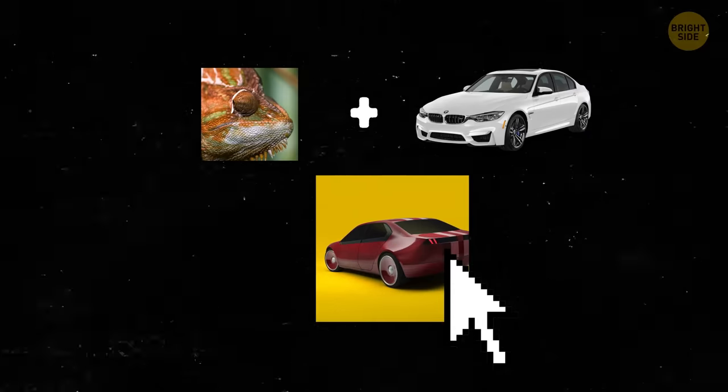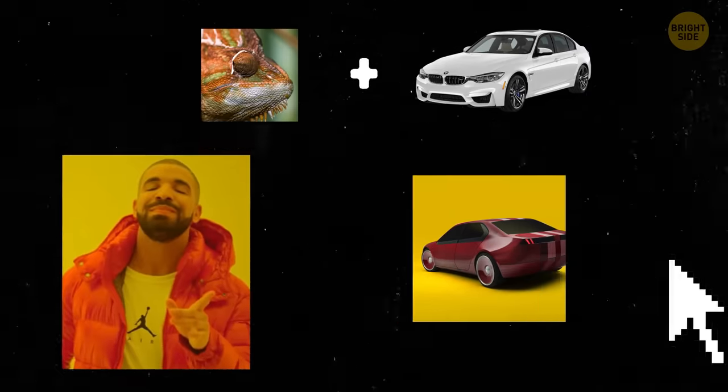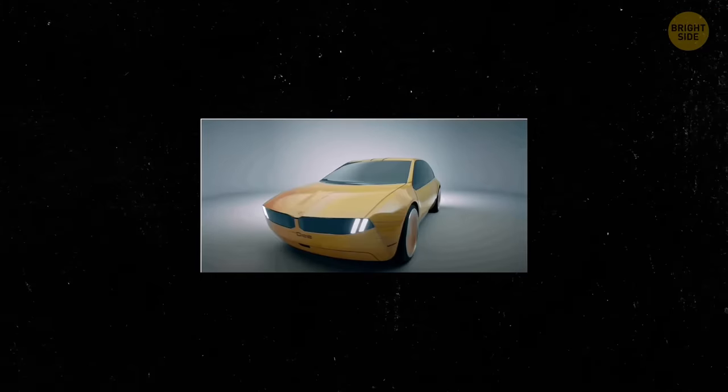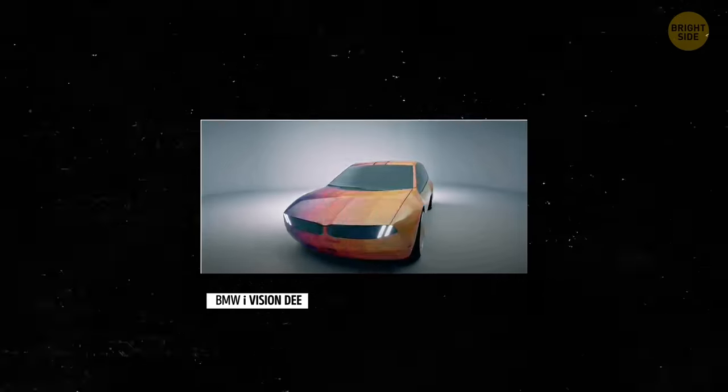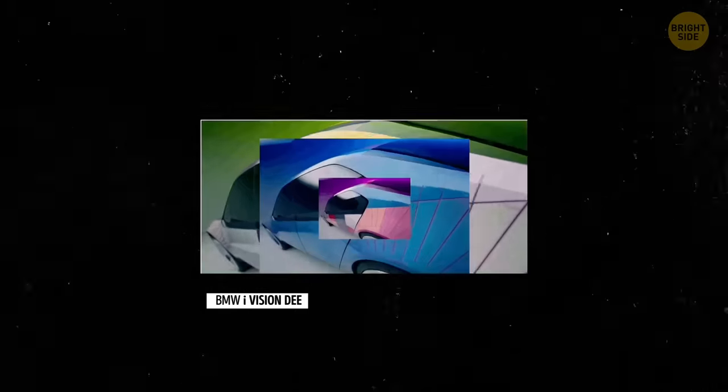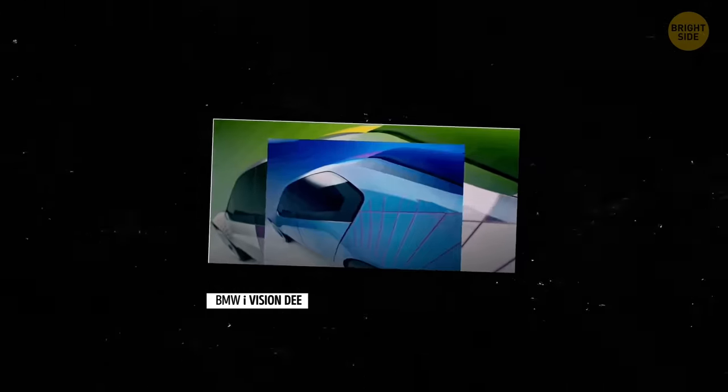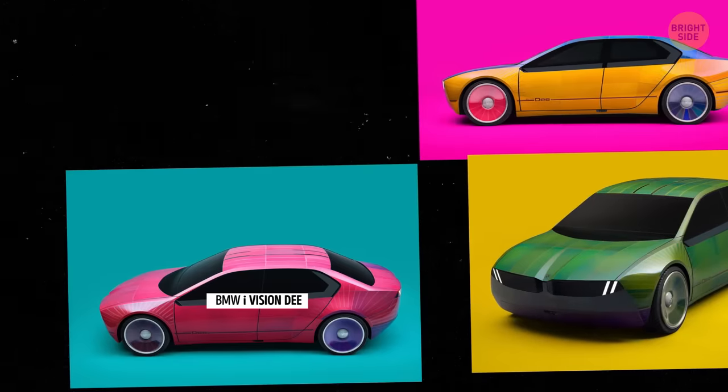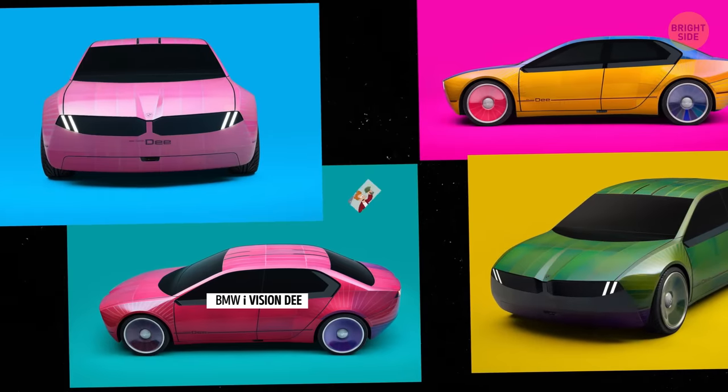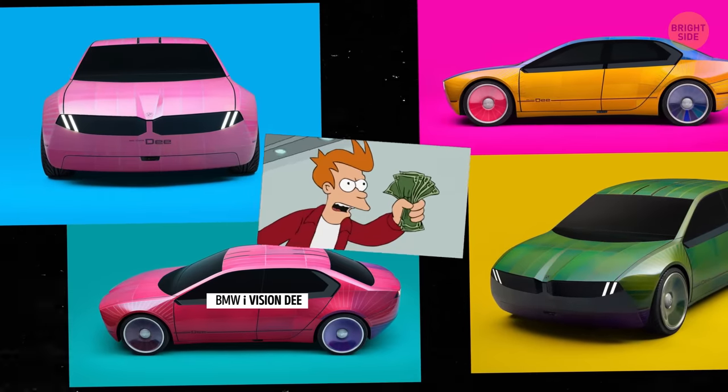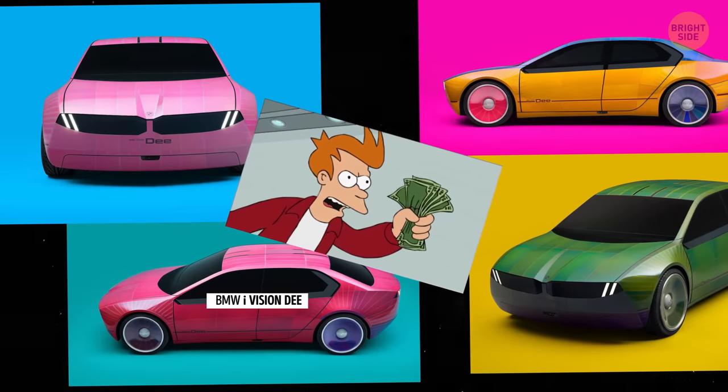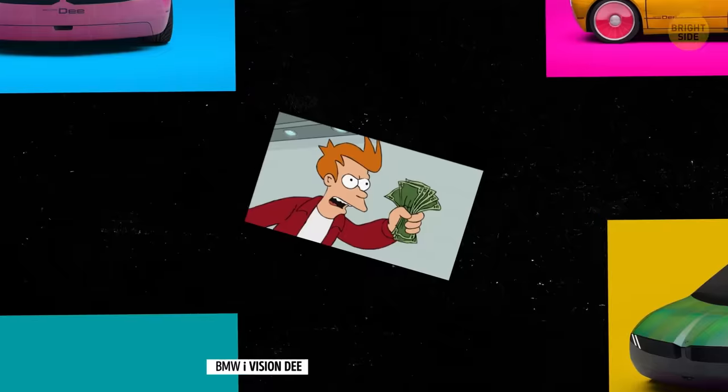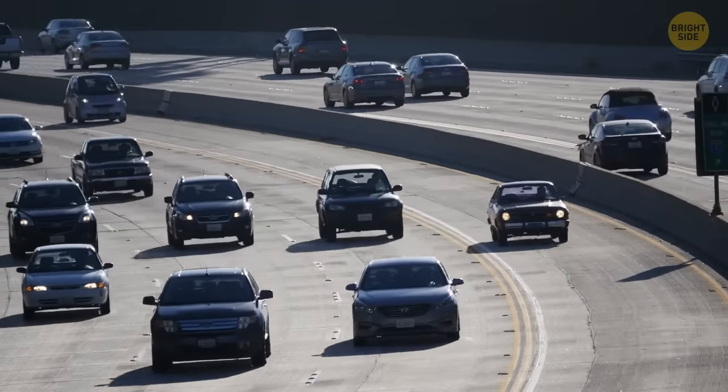About a year ago, BMW presented a concept. But they went from a monochromatic concept to a veritable rainbow of various shades and tints in just a year. Check out this electric sports sedan concept. It's called iVision D. And it's like a sneak peek into the future with all sorts of cool tech, like virtual assistants powered by AI and heads-up displays on the windshield. They even threw in a full-color version of e-ink technology, something we've never seen before from last year's concept.